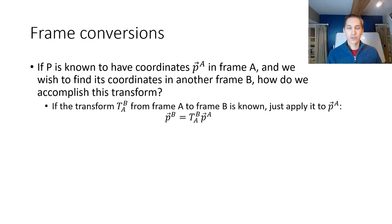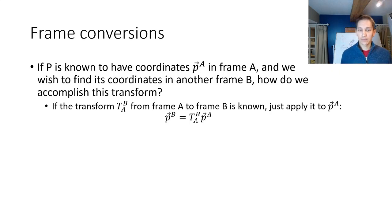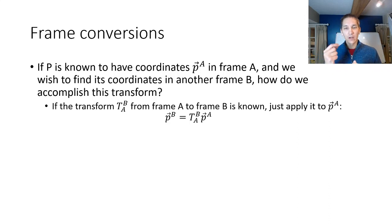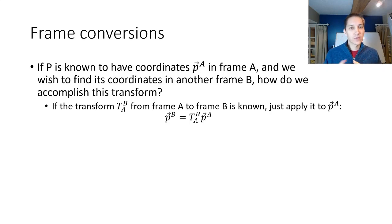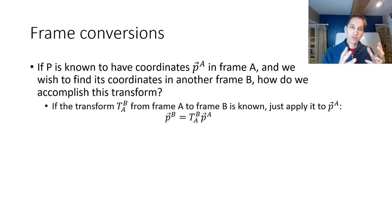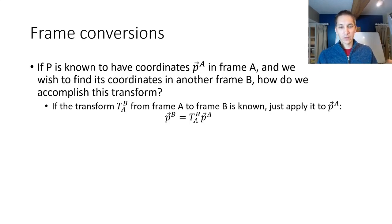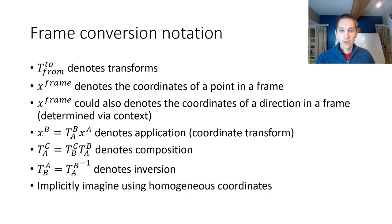Let's talk about coordinate conversion. If we have some point whose coordinates are represented in frame A and we want to find its coordinates in frame B, we can do it easily if we know the transform between frame A and frame B. We use notation where the subscript of T denotes the frame being converted from, and the superscript denotes the frame being converted to. If we know this transform — whether it's a 4x4 homogeneous matrix or a rotation and translation — we just apply it to the point P_A to perform the coordinate transform.